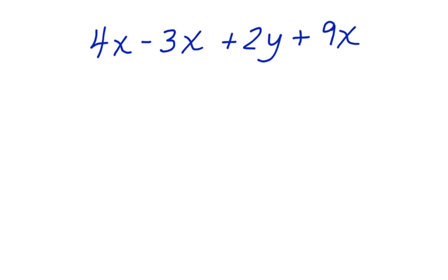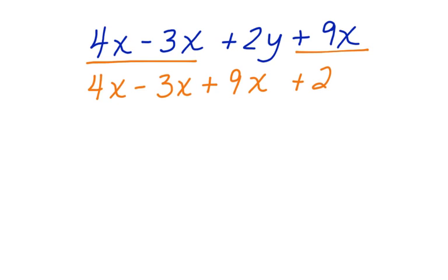In order to figure that out, let's look at what I'm going to do to simplify this expression. What I'm going to need to do is combine like terms. I have a 4x minus 3x, but then I have a plus 9x over here. So I can move this plus 9x. I can say 4x minus 3x plus 9x plus 2y.